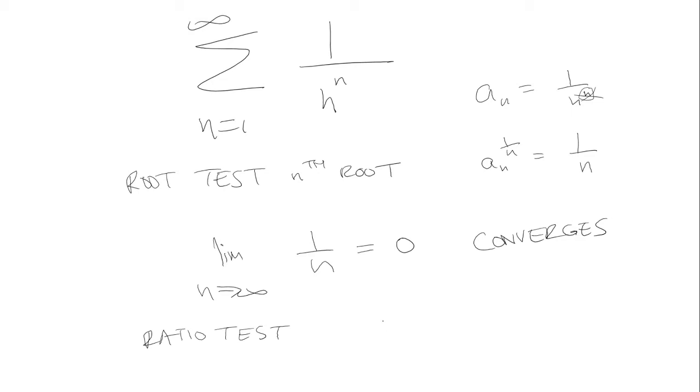So for the ratio test, we want to look at the n plus first term over the nth term. And then we're going to be taking the limit as n approaches infinity. So for the n plus first term, we're going to replace every n with n plus 1. And then we're just going to leave the nth term like that.